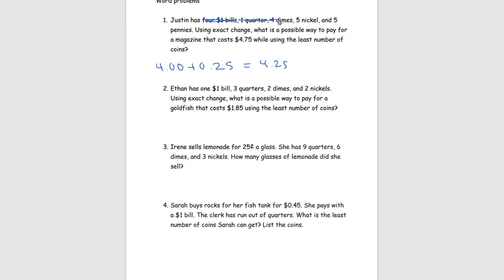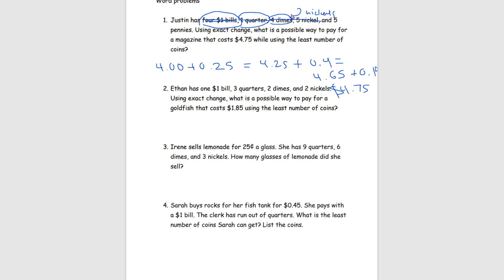Next we go to dimes. We cross the dimes out — 4 dimes is equal to 40 cents — so we add $0.40, giving us $4.65. We're missing 10 cents, and the fastest way is to use 2 nickels, so we cross out 2 nickels and add $0.10, getting us $4.75. So using exact change, a possible way to pay for the magazine is using 4 $1 bills, 1 quarter, 4 dimes, and 2 nickels.